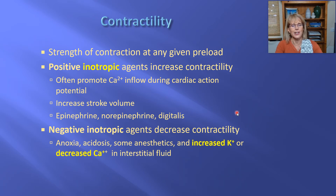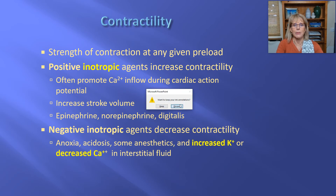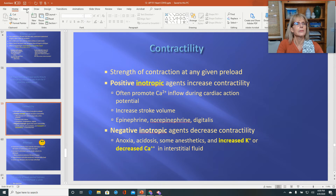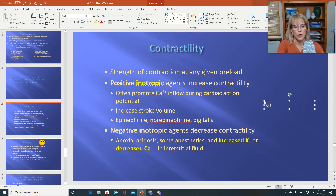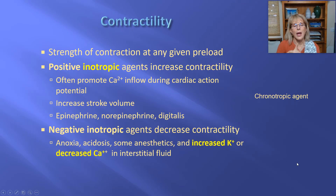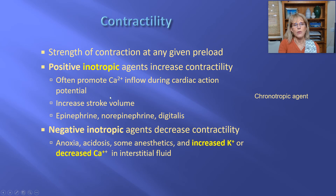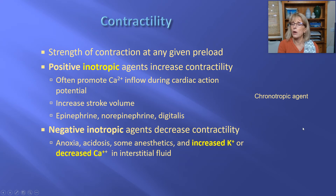A related concept is the chronotrope. A chronotropic agent is an agent that influences heart rate. Epinephrine is a positive inotrope — it makes the heart beat harder — and it is also a positive chronotrope — it makes the heart beat faster. There are medications that make the heart beat harder while making it beat more slowly. One of them, called digitalis, is very commonly used even now in heart failure.